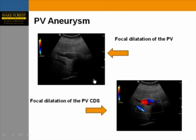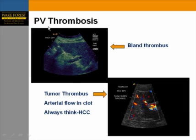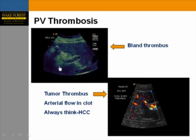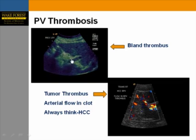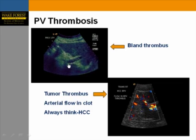Here is an example of a patient with portal venous aneurysm. On color Doppler, you can see mixing of signal within the dilated aneurysmal component — a known complication of long-standing portal hypertension. In patients with advanced cirrhosis, blood clots in the portal system may occur. A gray-scale image showing echogenic material within the portal vein without expansion indicates a bland thrombus.